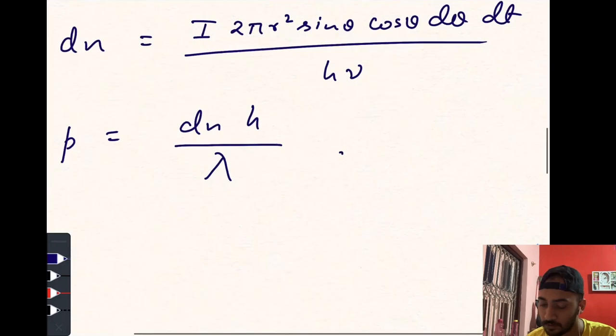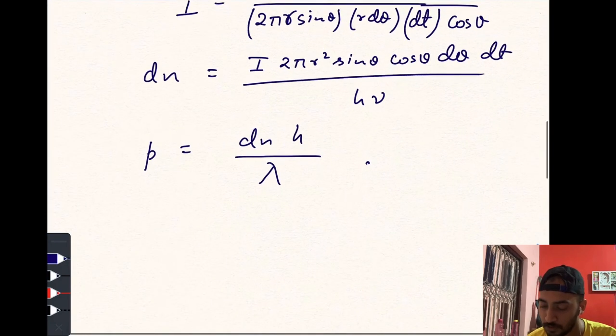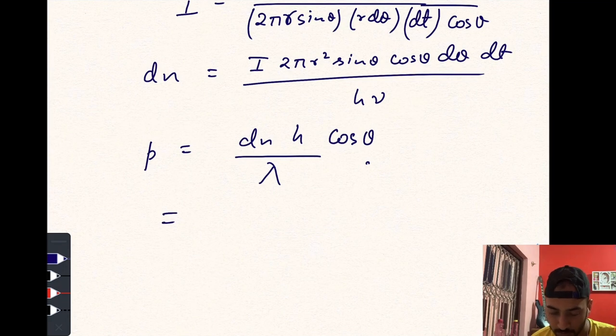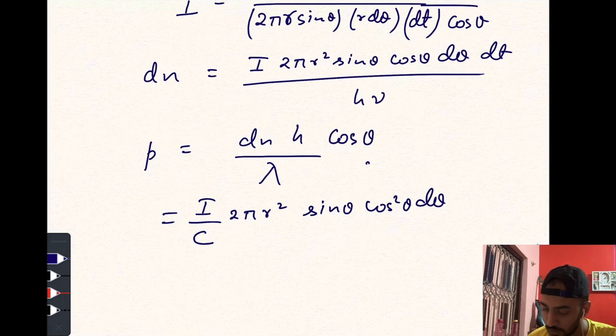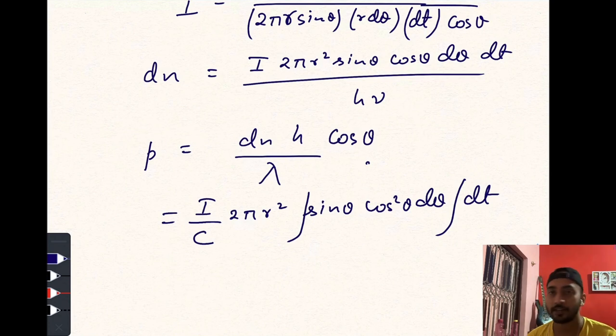So our final expression becomes I/c × 2π r² sin θ cos² θ dθ × dt, integration.